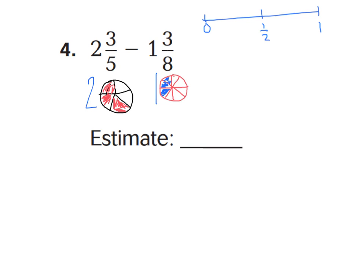When estimating a fraction, you want to estimate it either to zero, one-half, or one-whole. So when you look at the fraction portion of a mixed number, you want to look at the fraction only when you estimate.